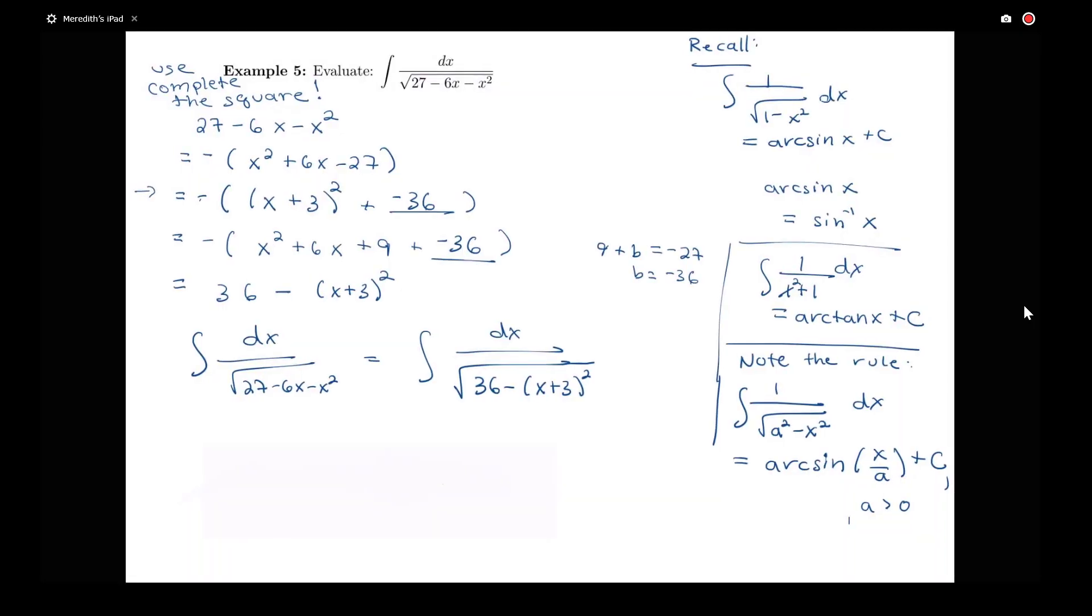So I see that I have this type of rule that I can apply. I still need to think about doing a little bit of a use substitution. So instead of having x squared, I actually have this x plus 3 squared. So let's go ahead and let u be equal to x plus 3. And then my du is my dx. So I have an integral then of du over the square root of 36 minus u squared.